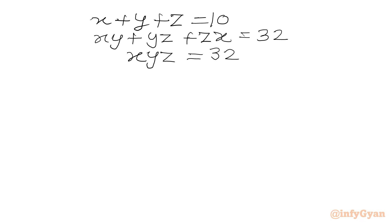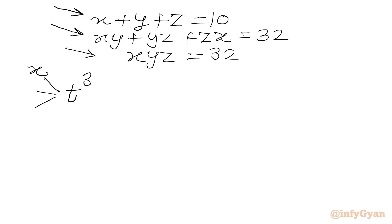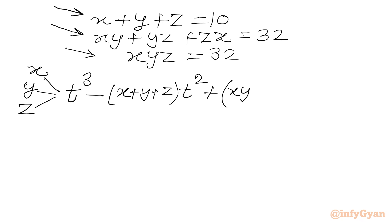Now you can think about one cubic equation whose roots are x, y, and z. Then this is the sum of roots, this is the sum of roots taken two at a time, and this is the product of roots. So we can write one cubic equation in variable t: t cubed minus sum of roots times t squared plus sum of roots taken two at a time times t minus product of roots equal to 0. This is how we produce one cubic equation just by knowing the sum of roots, product of roots, and sum of roots taken two at a time.